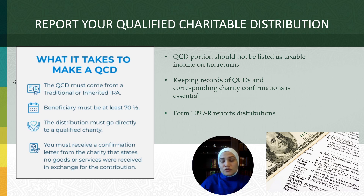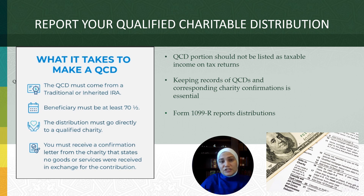Make sure to keep a good record of your QCD, especially the confirmation letters the charity should send you. Custodians generally require that you fill out the IRA distribution form to process your QCD — you will include the charity's tax ID, address, and the amount you want to donate. The custodian will process your request directly to the charity or mail prepaid checks. A few custodians allow you to use their checking services to do a QCD, but if you choose this method, you need to be extra diligent and keep very good records. You must ensure the charity cashes your check before year-end, as your custodian will not record any uncashed checks on your 1099-R, and you could end up not fulfilling your RMD — which would mean owing a 25% penalty to the IRS.